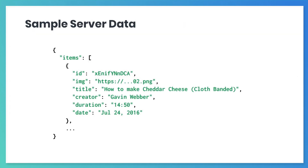Let's talk about the structure of the data our server will return. Check out the sample data. The ID field refers to the YouTube video ID for each video. The image field is a link to a thumbnail that can be used as a video placeholder as the video is loading. The title, creator, and duration are details about the video itself. And finally, the date is the video's publish date.